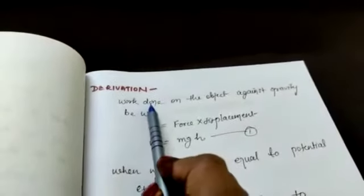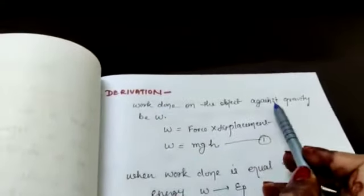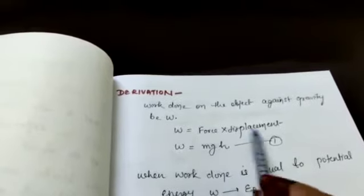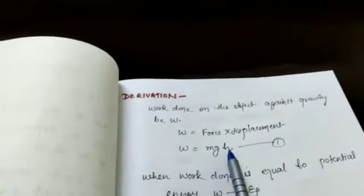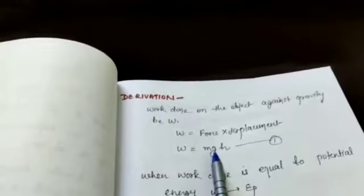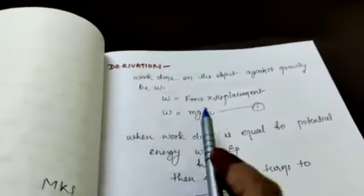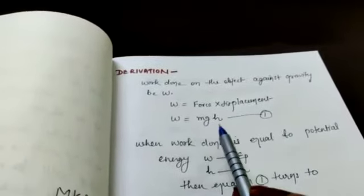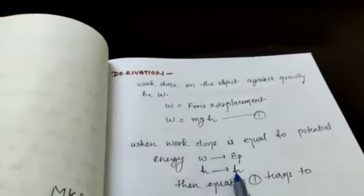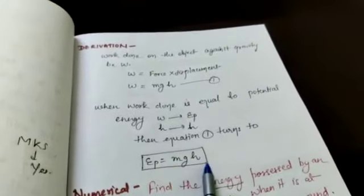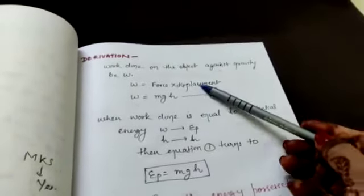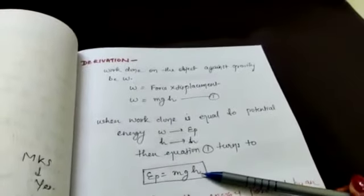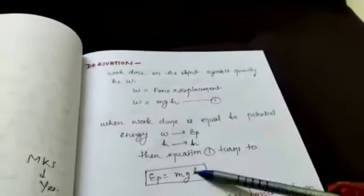Next we have derivation. Derivation is again from work done formula. Work done on an object against gravity. W is force and displacement. Force is MG. This G is against gravity. So W is equal to MGH. Work done is equal to potential energy. So this W changes to EP. And this S to H. So here EP is equal to MGH. It is very simple.